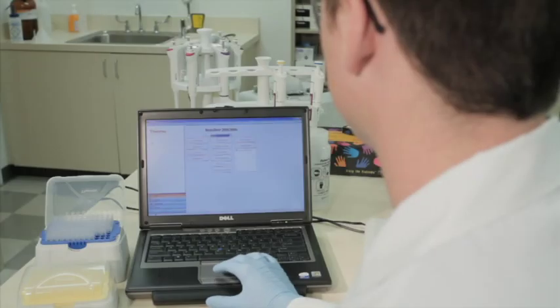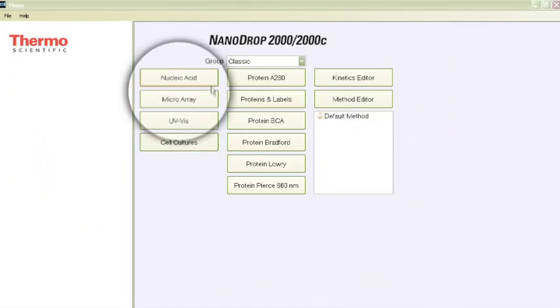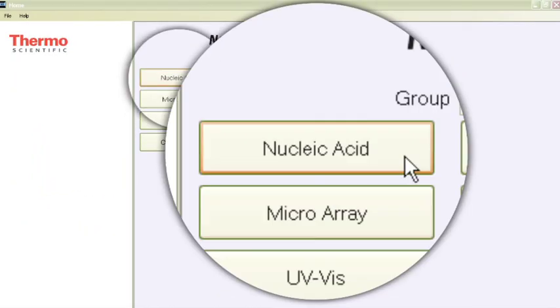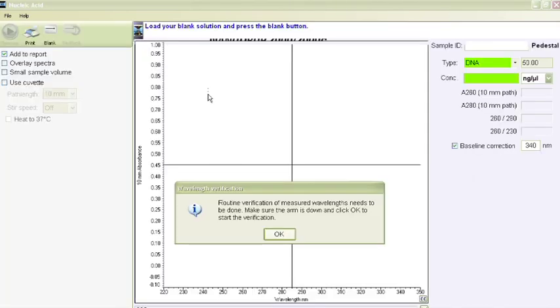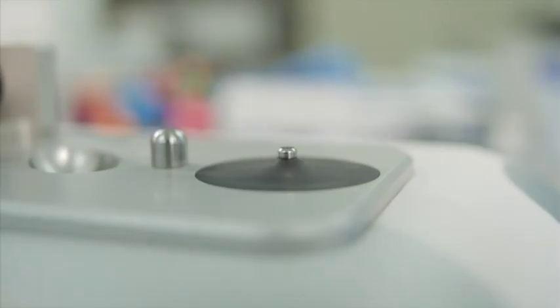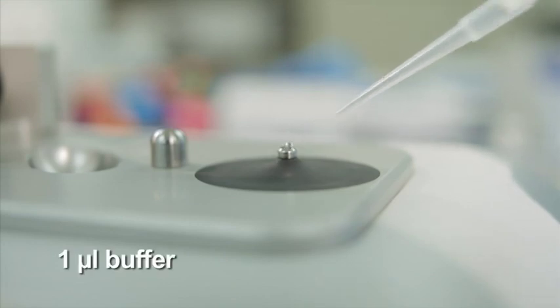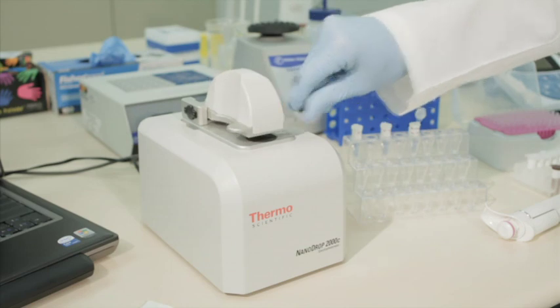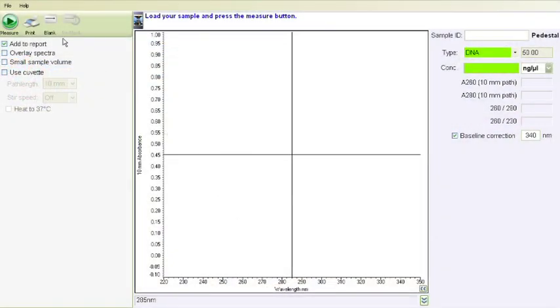Next, open the Nanodrop software and select the nucleic acid application. Use a small volume calibrated pipetter to perform a blank measurement by dispensing 1 microliter of buffer onto the lower optical surface. Lower the lever arm and select blank in the nucleic acid application.